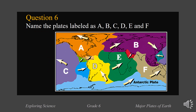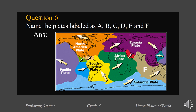Here we go with the last question, number six. You have to name the plates labeled A, B, C, D, E, and F. A is the North America plate. B is the Eurasia plate. C is the Pacific plate. D is the South America plate. E is the Africa plate. And F is the Australia plate.